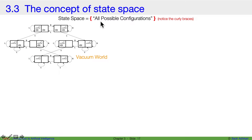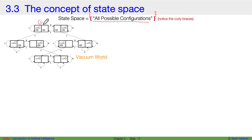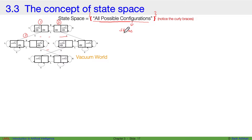State space is the set of all possible configurations. It's very important to notice that it's a curly bracket here, which means it's simply a set. So here's your first state, second state, third state, and so on. It is simply the set of all possible configurations. Configurations also refers to states, so all possible states.